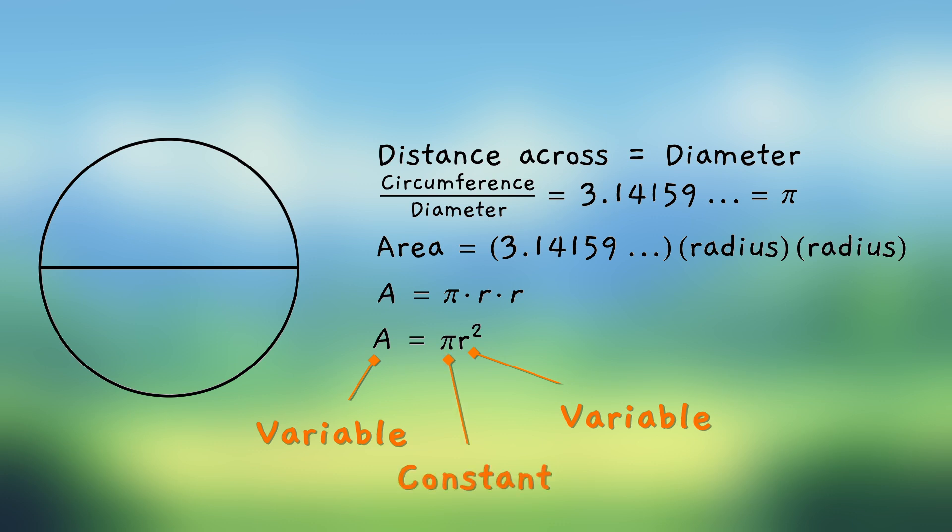Because this value, 3.14159, never varies. It's always the same, just like the speed of light. So here are three different places where letters are used in algebra.